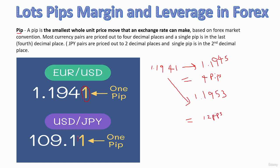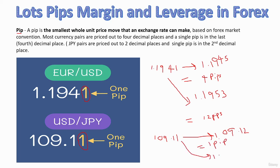For Japanese yen currency pairs, PIP is the value of the second decimal place. The difference in one example is 1 PIP, and in another example the difference is 10 PIPs.